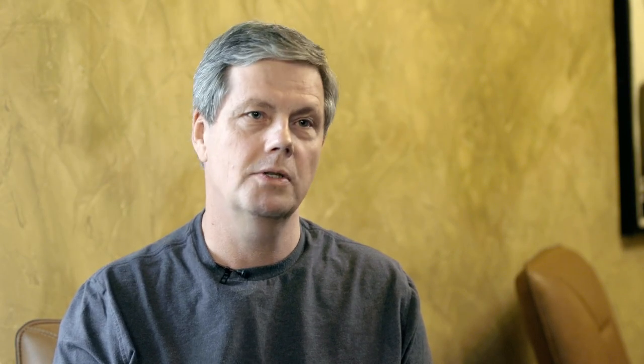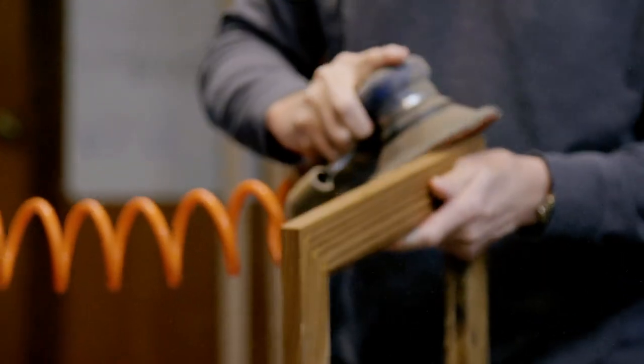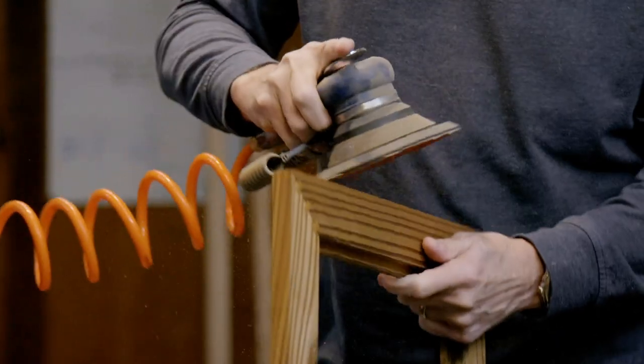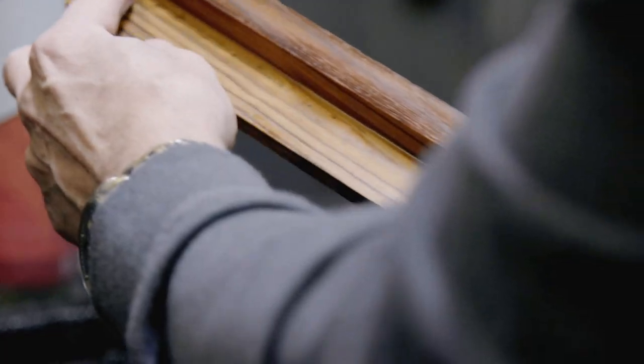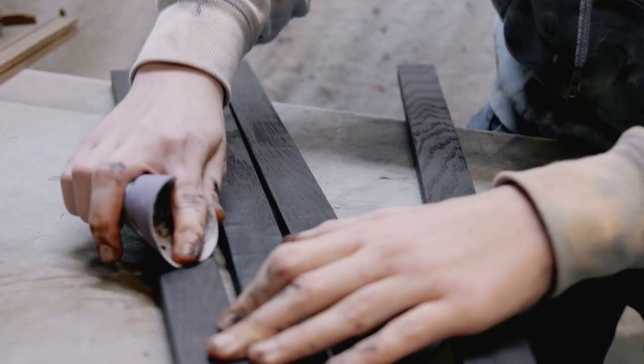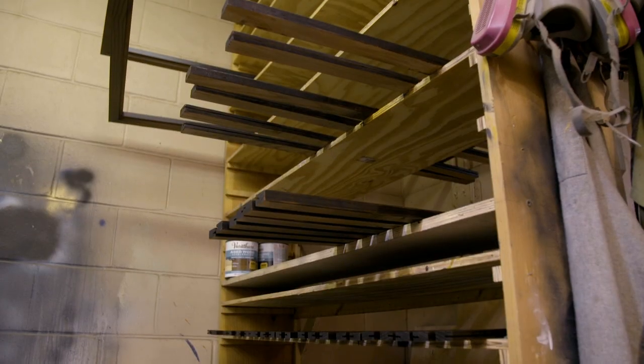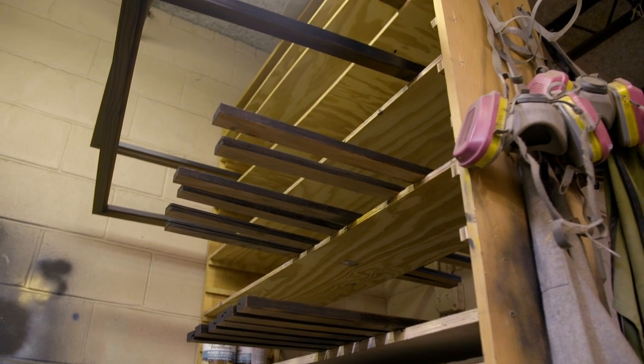Once the glue is dried, we have a sanding table where we hand sand every single piece that goes out and that's actually more delicate than you might think. You're sanding it before it's finished but sometimes it'll be finish one, come back to the sanding table. We'll finish two, come back to the sanding table. Most of the things that we sell have at least three trips to and from.